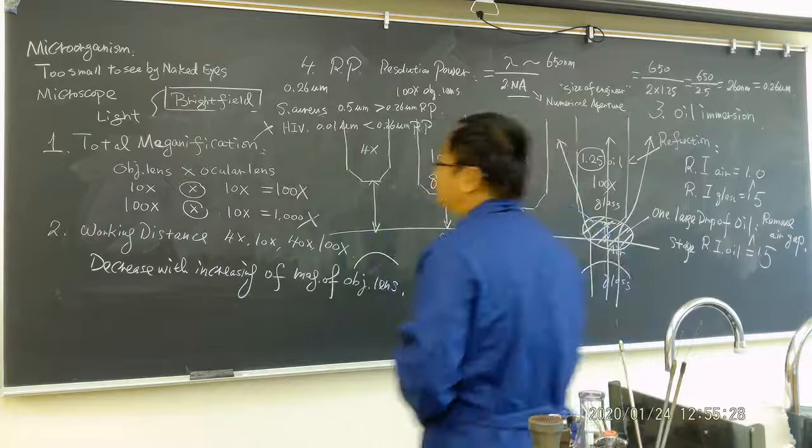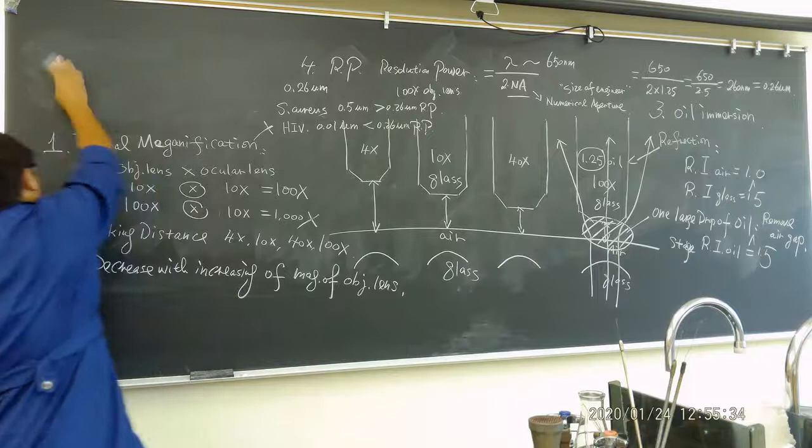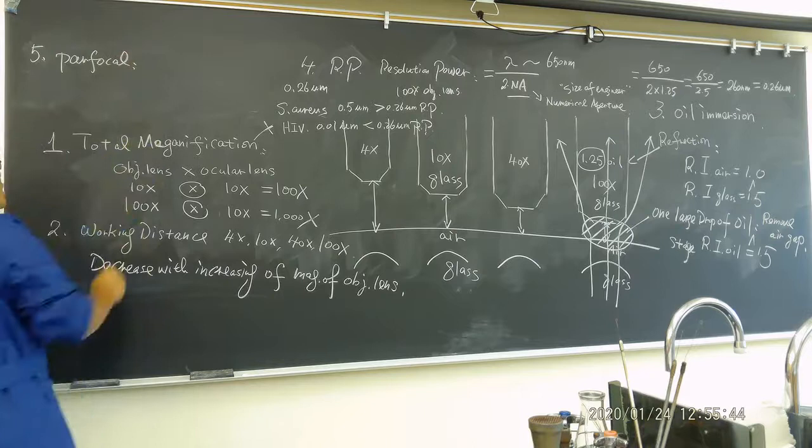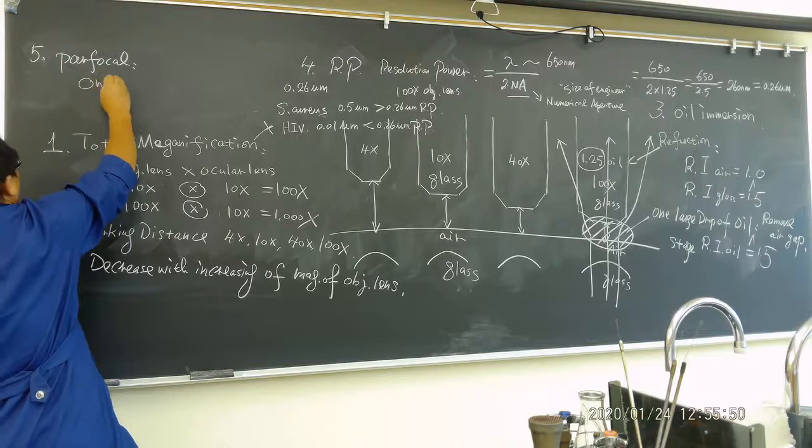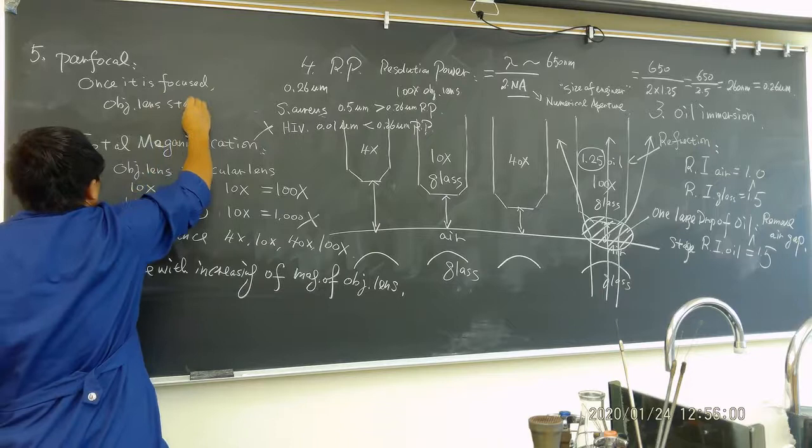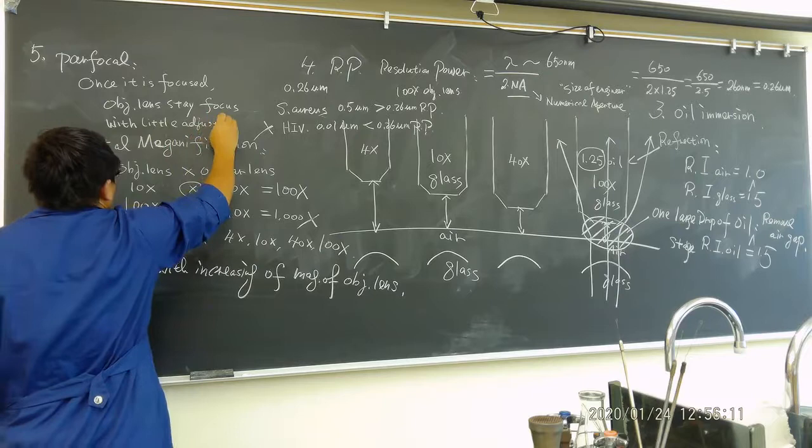Now the next question we're going to mention, which is a very good characteristic for a light field microscope, which is called parfocal. How do you understand the parfocal? Which means once it is focused, objective lens stays focused with little adjustment.